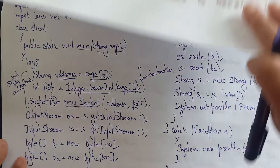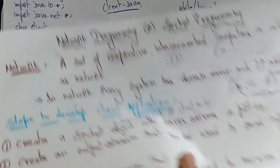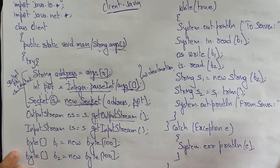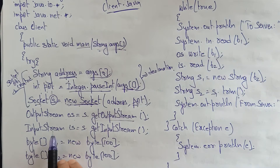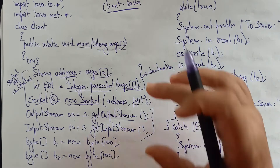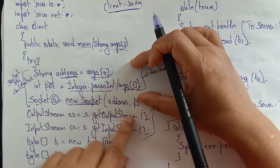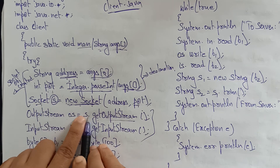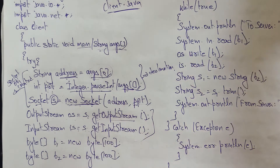After creating the socket object, create an OutputStream — because you have to send information to the server: OutputStream os = s.getOutputStream(). Then create an InputStream — because you want to receive information from the server: InputStream is = s.getInputStream(). Output and input streams are now created using the socket object s.